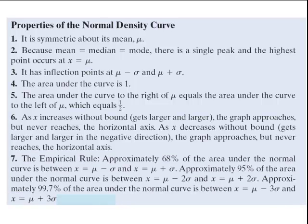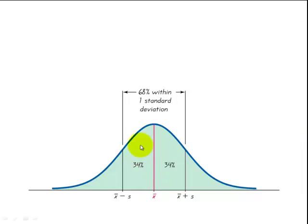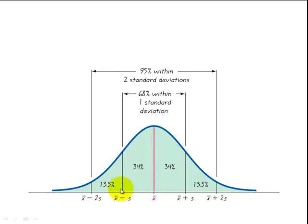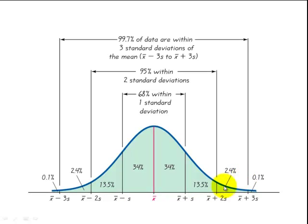The empirical rule: approximately 68% of values are within one standard deviation of the mean, mu. Approximately 95% are within two standard deviations of mu. And approximately 99.7% of the area under the curve is between three standard deviations above and below the mean. Visually, one standard deviation covers 68%, two standard deviations covers 95%, and three standard deviations covers 99.7%.